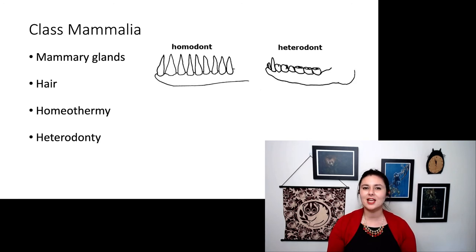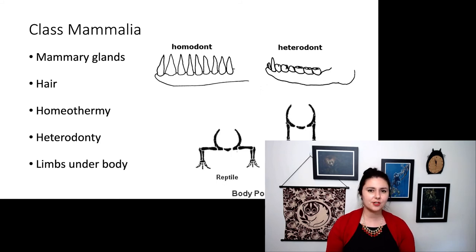And we have something called heterodonty. Hetero again means different. Donty means teeth. So now we actually have distinctly different types of teeth. So you can see in our heterodont we have incisors, canines, premolars, and molars. Rather in other reptiles they are homodonts or every tooth looks the same. We also have a different orientation of our limbs. So now our limbs are oriented straight under our body rather than to the side and we're actually much more efficient at running than any other reptile.